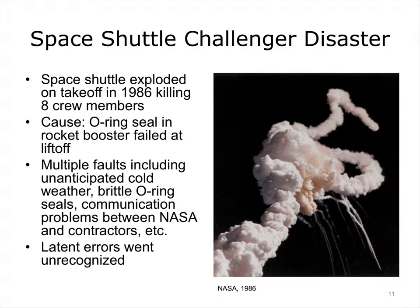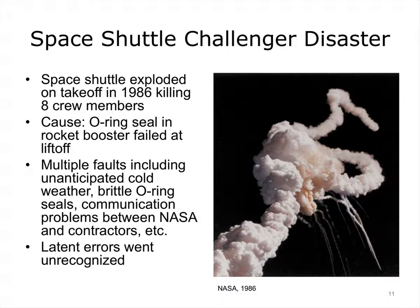The space shuttle Challenger disaster in 1986 and the Three Mile Island nuclear reactor accident in 1979 represent watershed events in the history of human factors analysis. In both cases, careful scrutiny of the events revealed multiple faults. In the case of the Challenger disaster, the proximal cause of the accident was the failure of an O-ring seal causing a booster rocket to explode at takeoff. However, closer study revealed a litany of latent conditions, including poor communications and lack of preparation for cold weather conditions, that enabled such a disaster to occur. As a result, the shuttle exploded and all eight astronauts were killed.